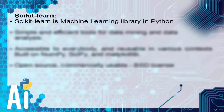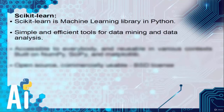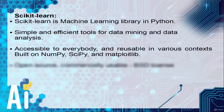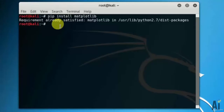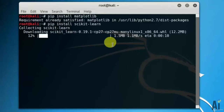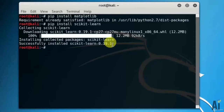Next, scikit-learn is a machine learning library in Python. It provides simple and efficient tools for data mining and data analysis, accessible to everybody and reusable in various contexts. It is built on numpy, scipy, and matplotlib, and is open source with a commercially usable BSD license. Let's install this using the command pip install scikit-learn. It's installing all the libraries and once installed it will show the result message.